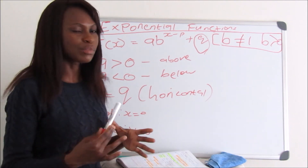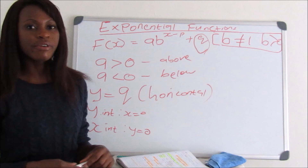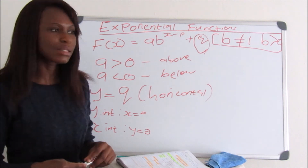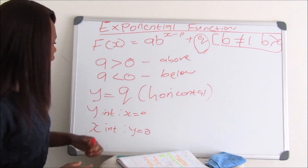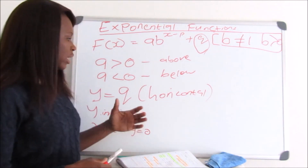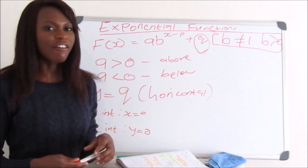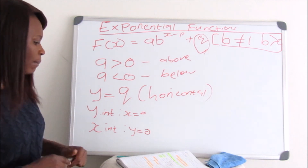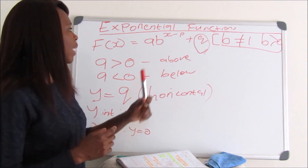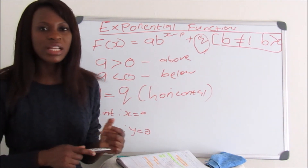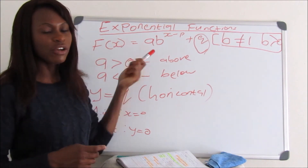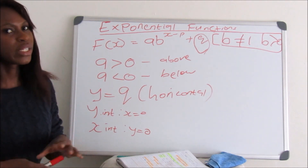If A is less than 0, the graph will lie below the asymptote. With exponential graphs, we only have the horizontal asymptote, which is determined by Q — the horizontal asymptote equals Q. You must find your Y-intercept by making X equal to 0, and also find your X-intercept by making Y equal to 0. Then find another point by substituting another X value into the equation to get the corresponding Y value.